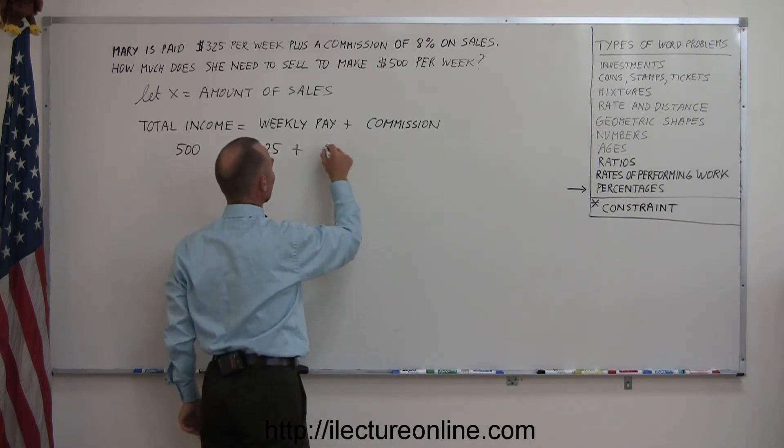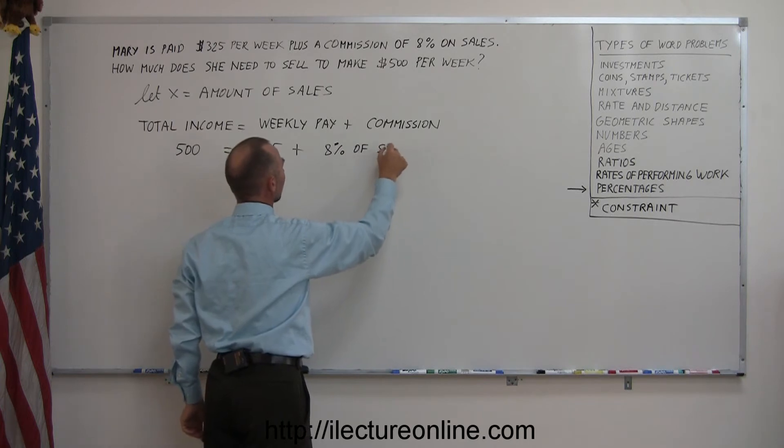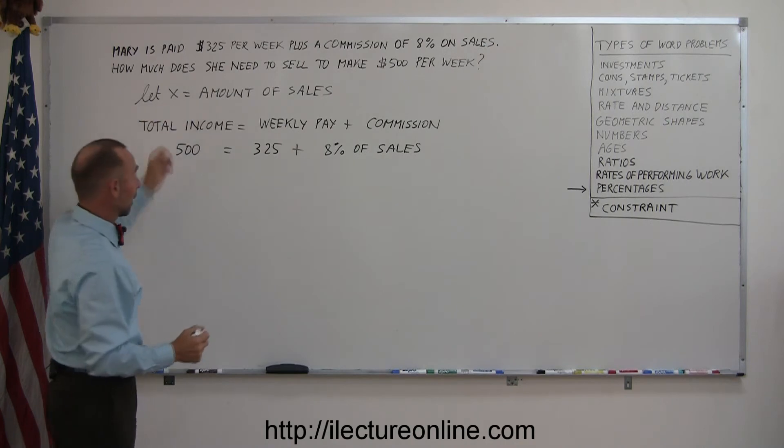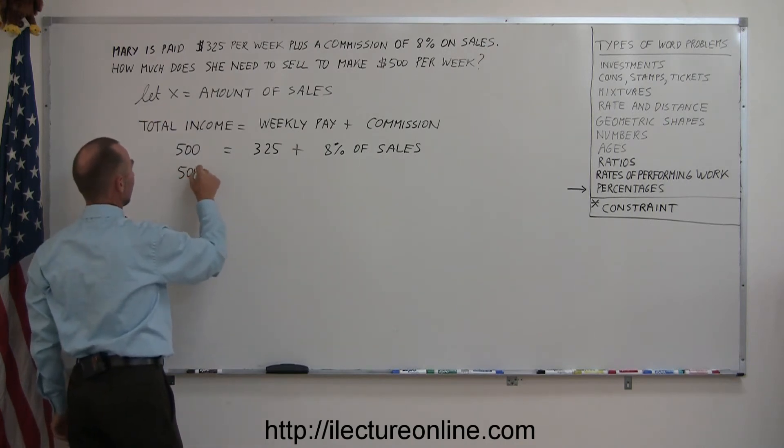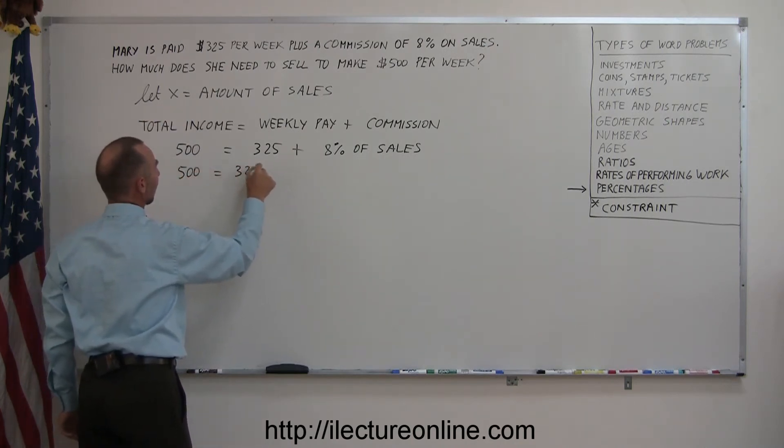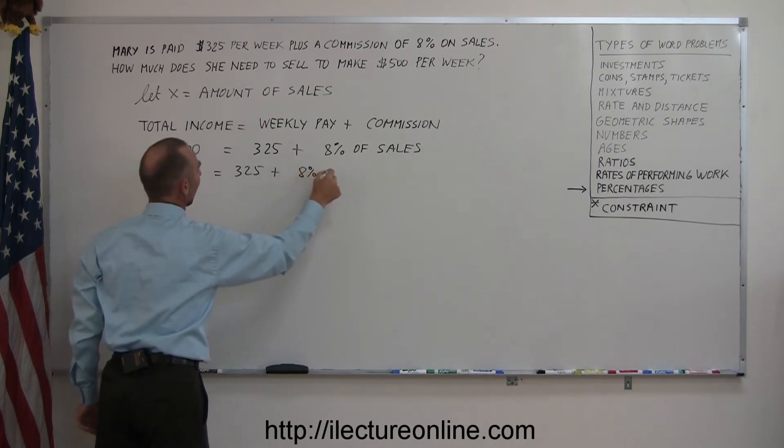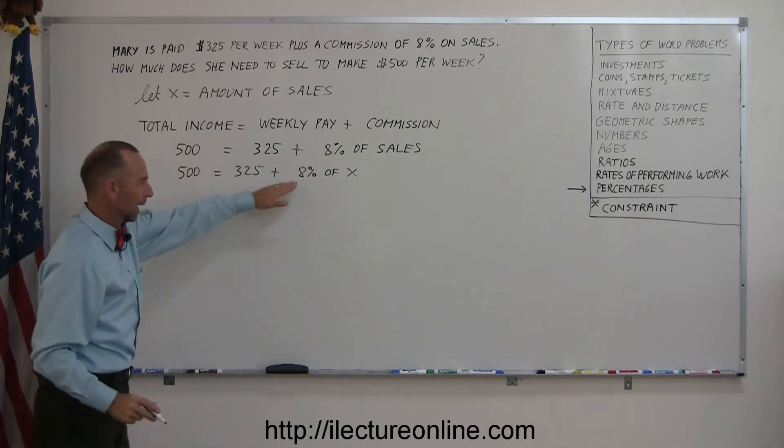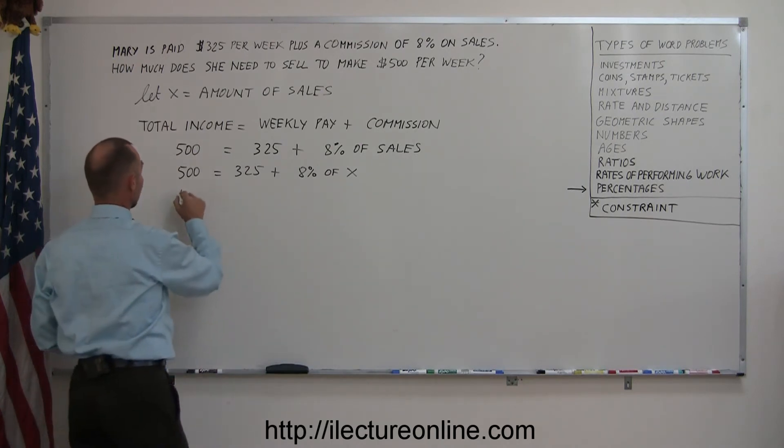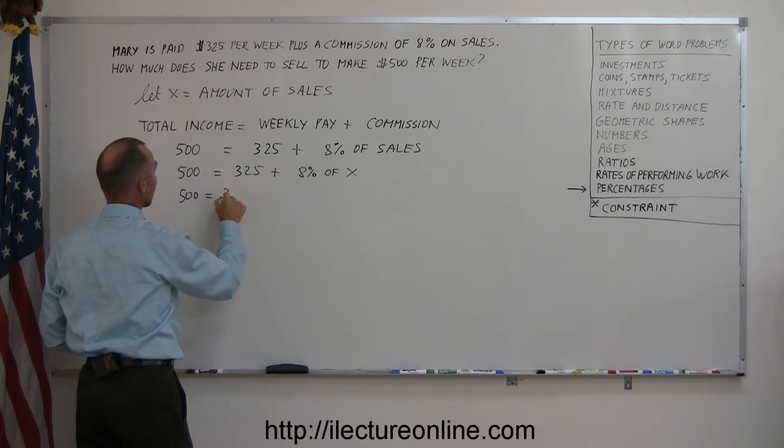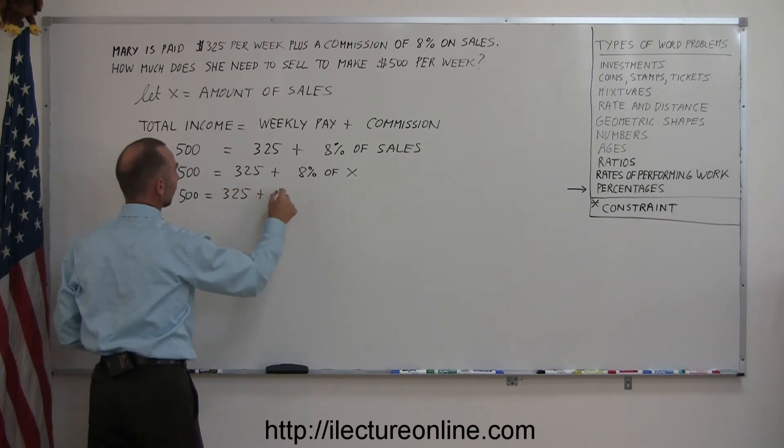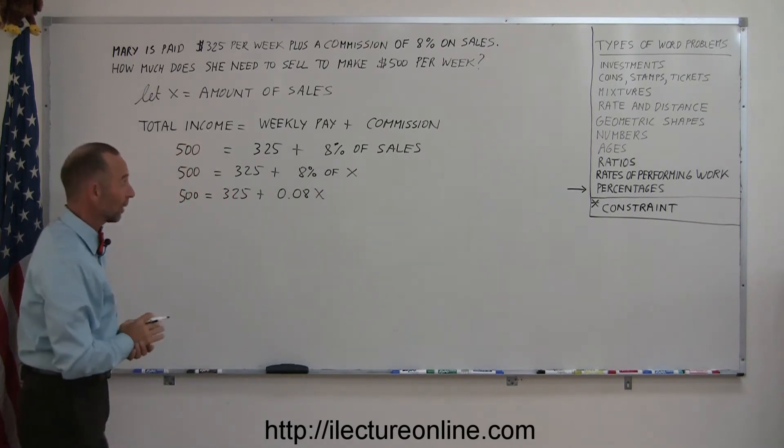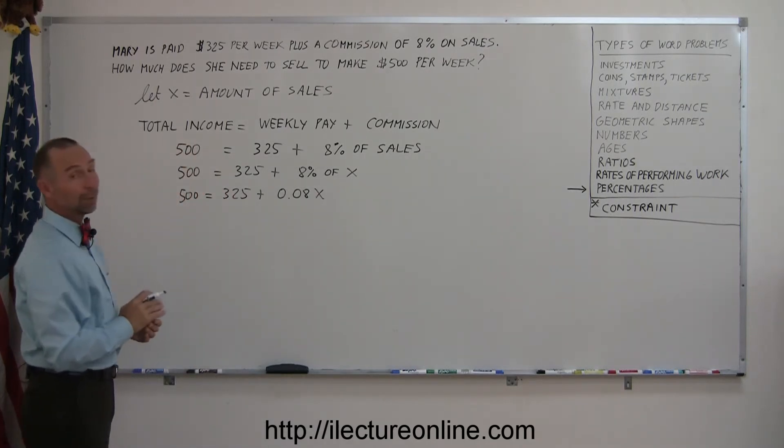So that would be 8% of sales. And we define the amount of sales by x. So now we can write 500 equals 325 plus 8% of x. And of course we don't want to write it like that. We want to write it with a decimal. So that means 500 equals 325 plus 0.08x, because 8% is the same as 0.08 in decimal. And now we're ready to solve for x.